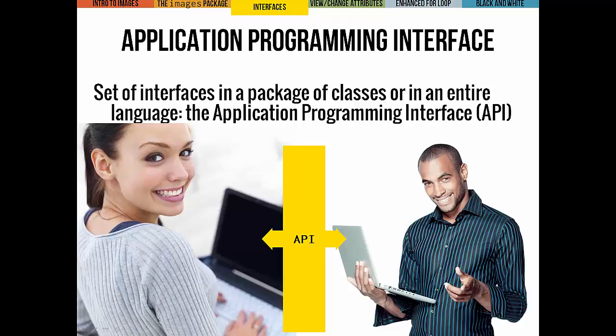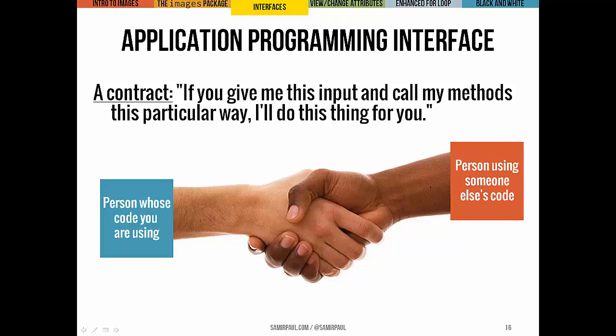When we gather together all the interfaces in a package or in a language, we call that the Application Programming Interface, or the API. An API is what allows two programmers to use each other's code properly — one can refer to code written by the other using the interface because they can trust the inputs and outputs, since those are exactly specified. You can also think of it as a contract between somebody who wrote some code and somebody who's using it: it's saying, 'I wrote a method — if you give me this input and call my methods in this way, I'll do this thing for you and you can trust that.'